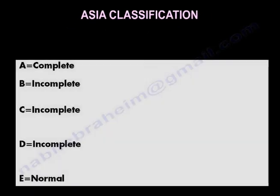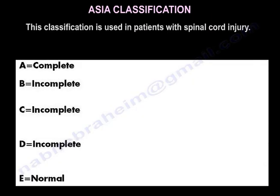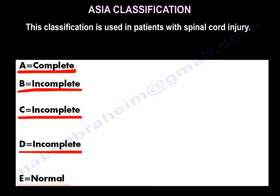ASIA classification. This classification is used in patients with spinal cord injury. The grades are ASIA A, B, C, D, and E.